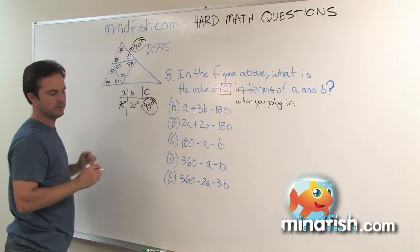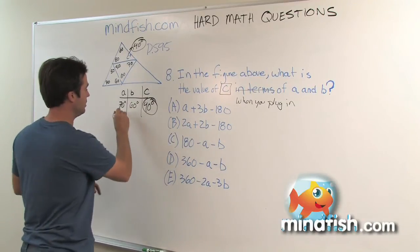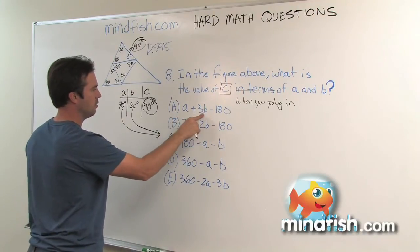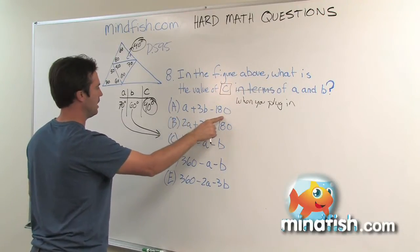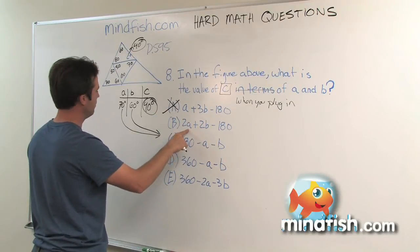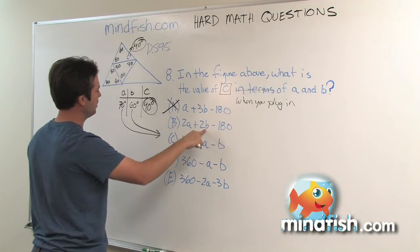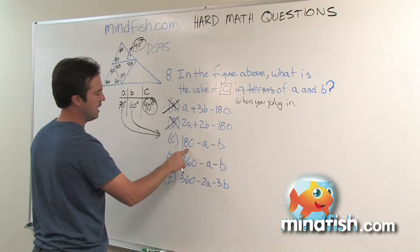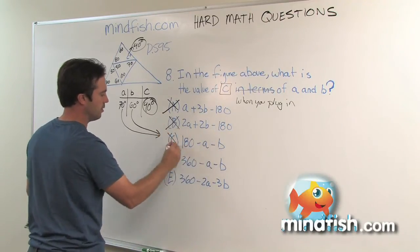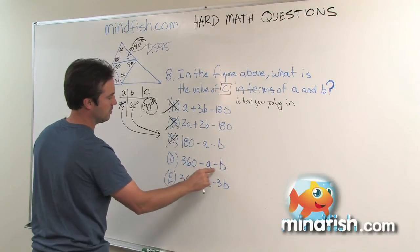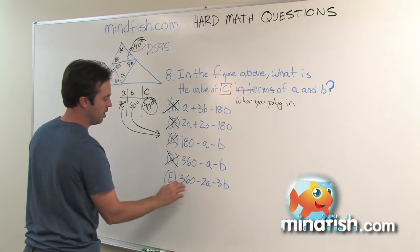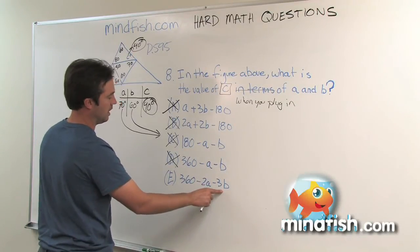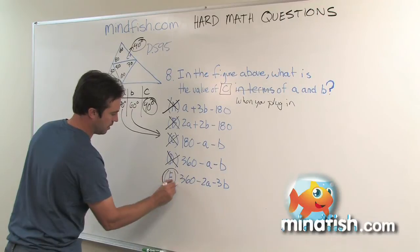So now we've got what we want, and we have one step to go. We just need to take our A and our B and plug them in. So we ask ourselves, is 70 plus 180 minus 180 equal to 40? No. Is 140 plus 120, which is 260 minus 180 equal to 40? No. Is 180 minus 70 minus 60 equal to 40? No. Is 360 minus 70 minus 60 equal to 40? No. But 360 minus 140 is 220, minus 180 is in fact 40.